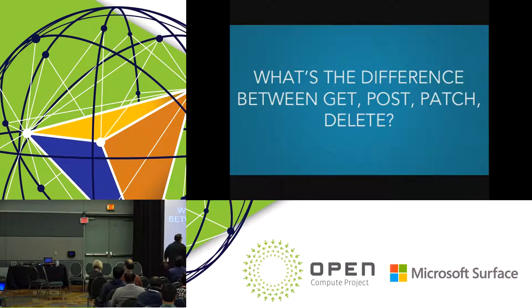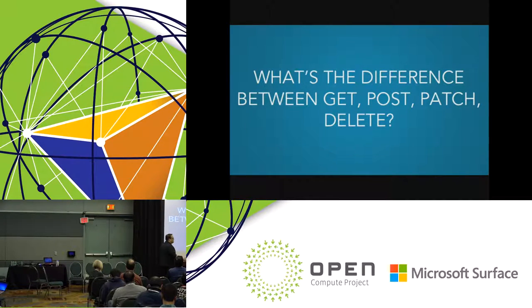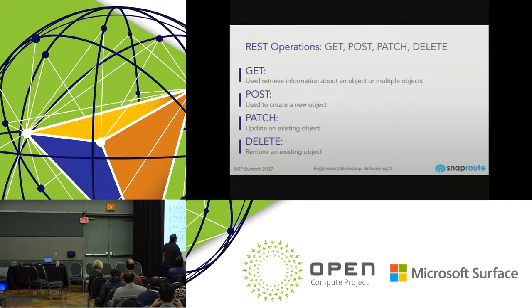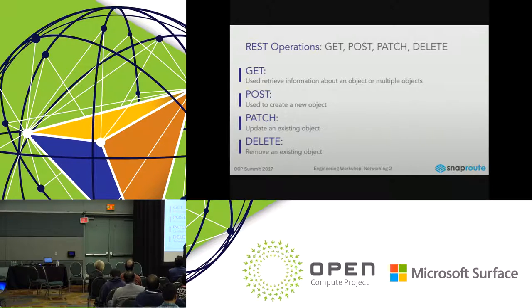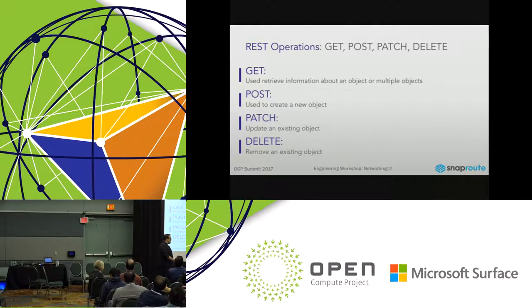The difference between the types in an API: GET means getting information or objects; POST is creating something new; PATCH is updating something that already exists; and DELETE is removing it. Very simple concepts.